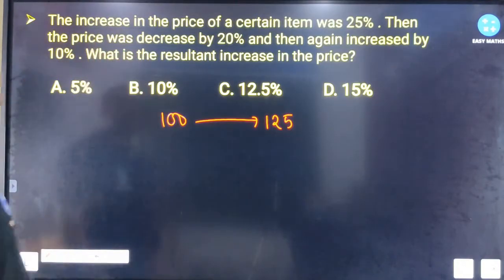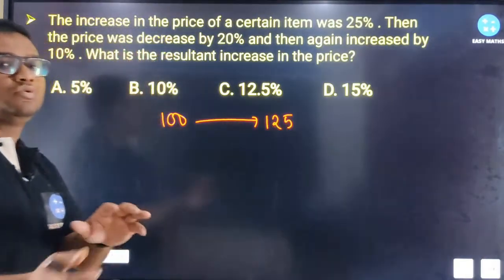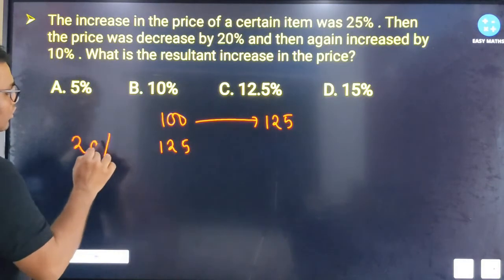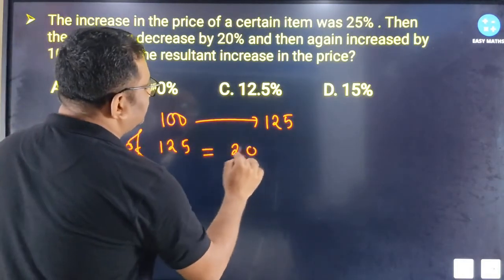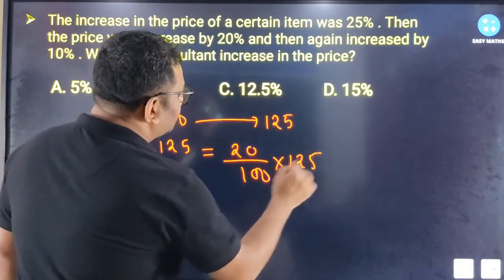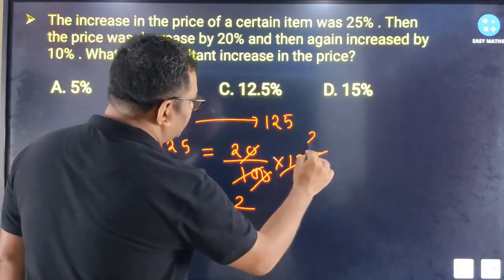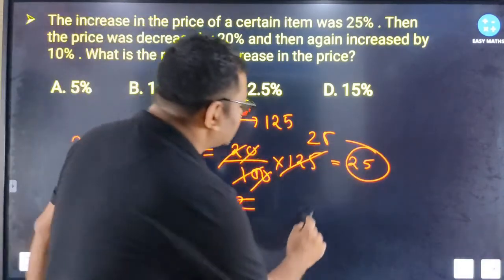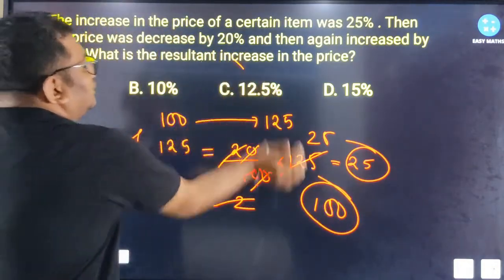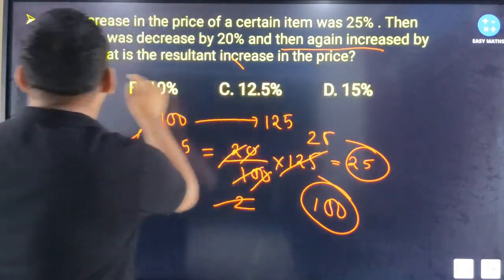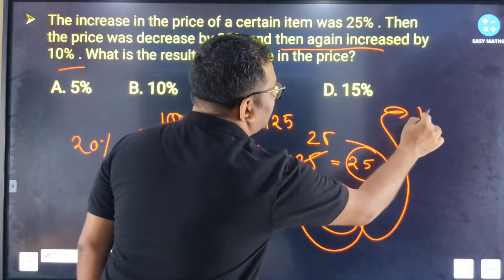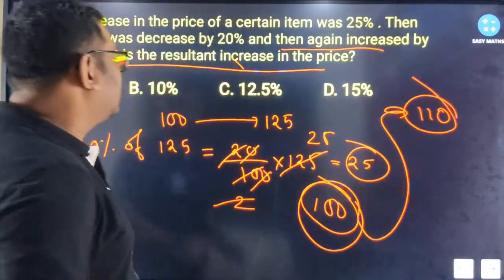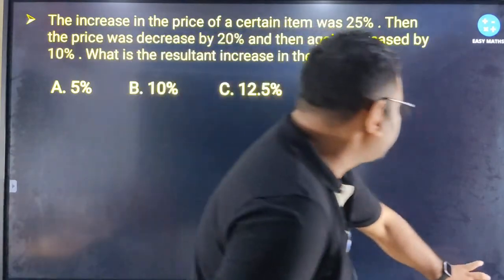Then the price was decreased by 20%, so what is the price? 20% decrease on 125: 20 divided by 100 multiplied by 125 equals 25. So 125 minus 25 equals 100. Again increased by 10%, so 100 multiplied by 110% gives 110. Option B is your correct answer.